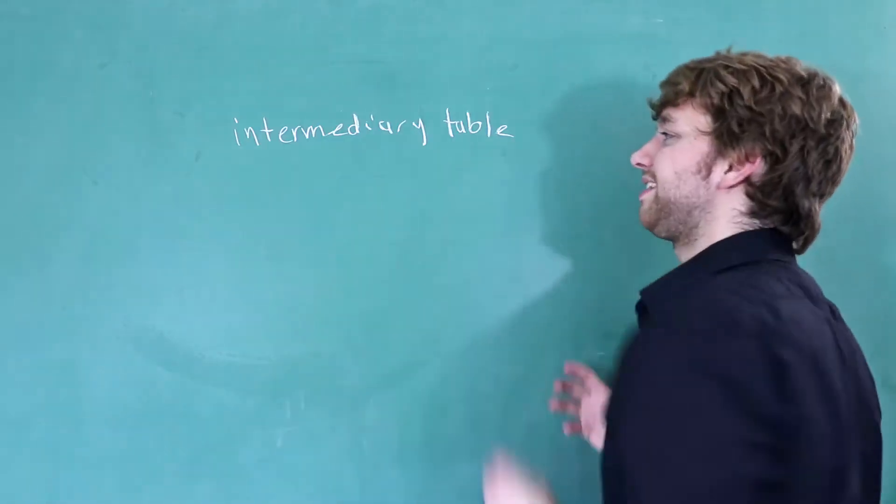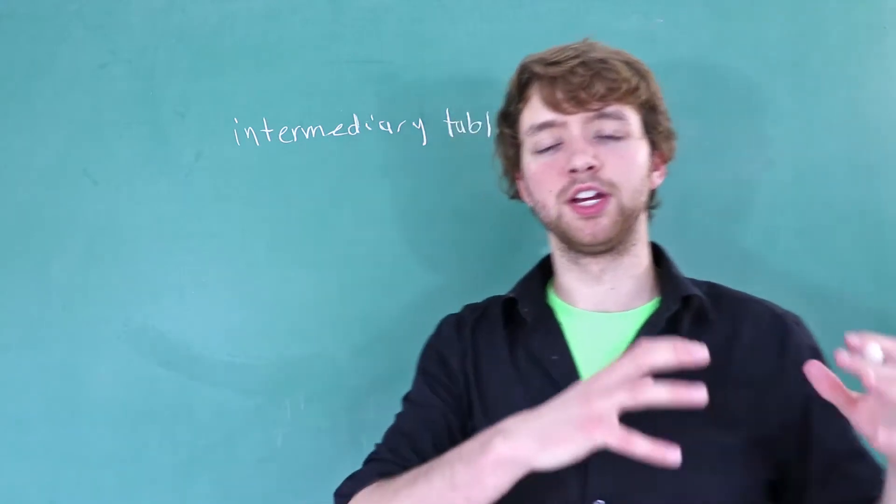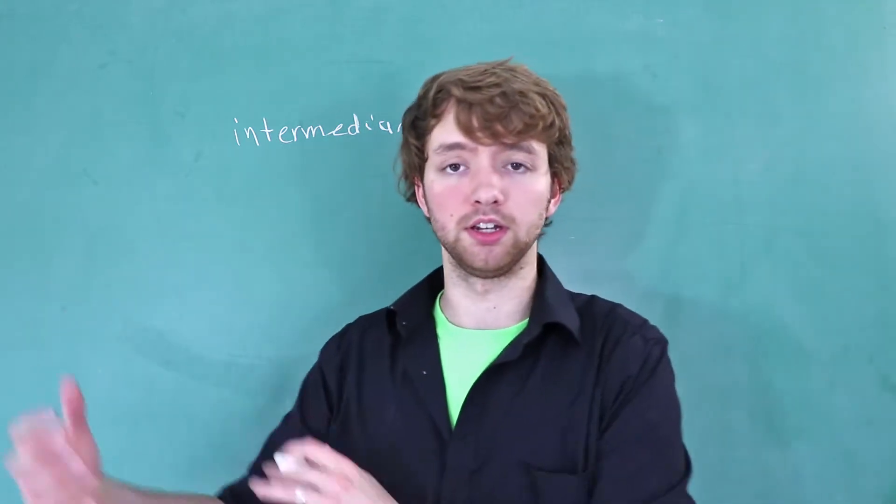Welcome back to your DB2 tutorial series. A couple of videos ago I discussed many-to-many relationships and how they need an intermediary table. The example I gave was users listing things they were interested in.